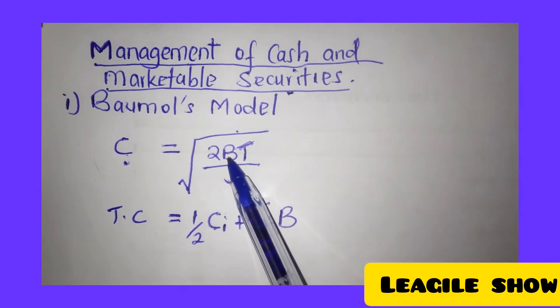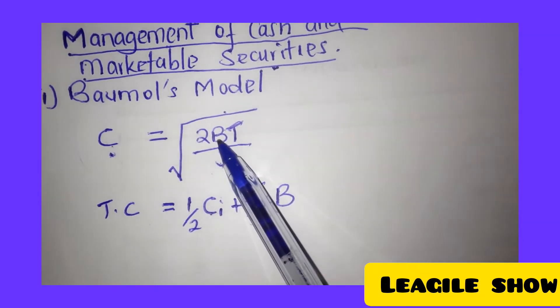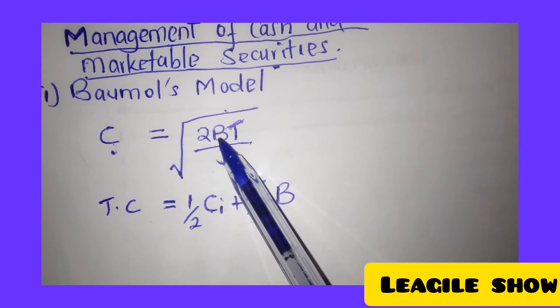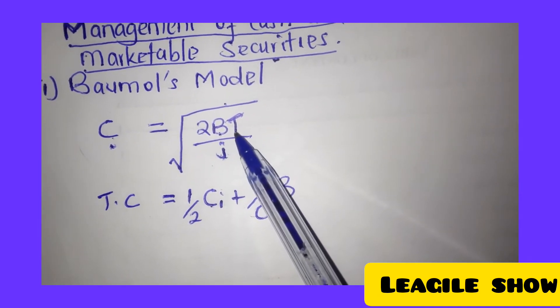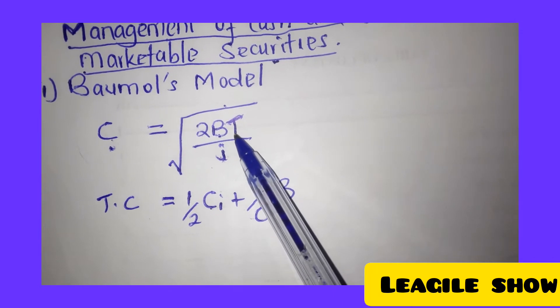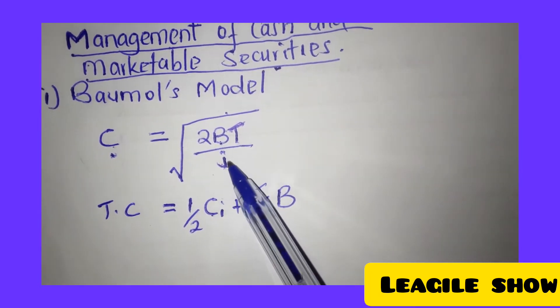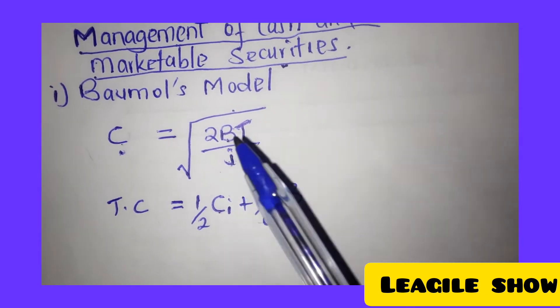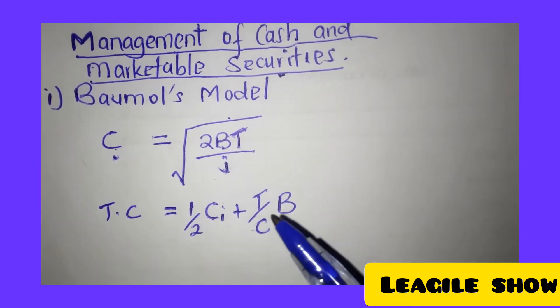B here represents the fixed cost of making a security trade. T in this case is the total annual cash requirements. Then i is the opportunity cost of holding cash.